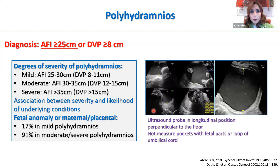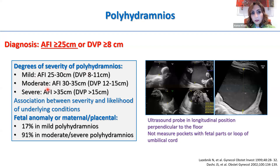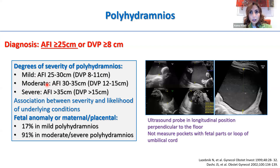How do you diagnose polyhydramnios? AFI 25 cm or more, or DVP 8 cm or more — though as noted, AFI seems to perform better. There are levels of severity: mild, moderate, and severe, with various cutoffs as shown here. This is important because the likelihood of finding an underlying condition correlates with severity.